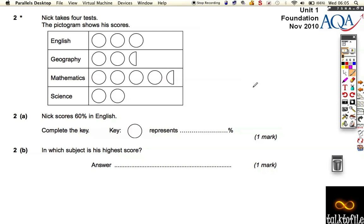Nick takes four tests, the pictogram shows his scores. He scores 60% in English, so to get to 60% in three steps means that one circle must be 20%. Let's look at his scores: 20, 40, he scored 50% in Geography. In Maths he scored 20, 40, 60, 80, 90% - he did really well in Maths, hopefully like you're going to do in your exam.